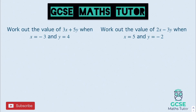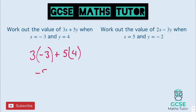Here are the answers. For the first one, we have 3 lots of negative 3, adding 5 lots of 4. 3 lots of negative 3 is negative 9, and 5 lots of 4 is 20. So it's negative 9 add 20, which is 11.